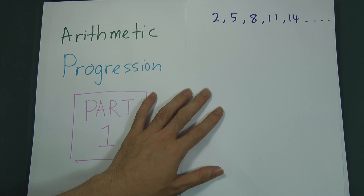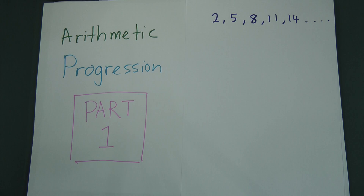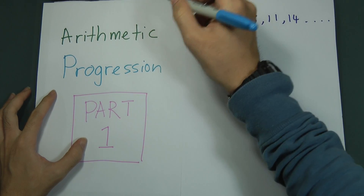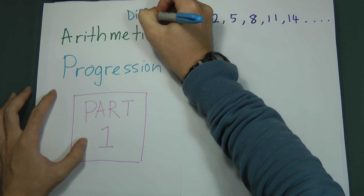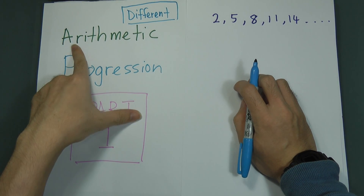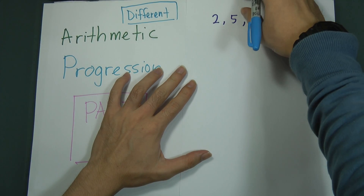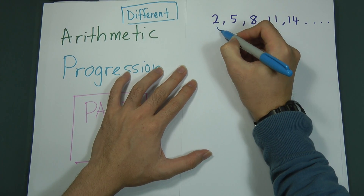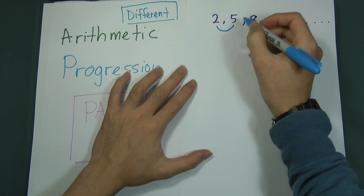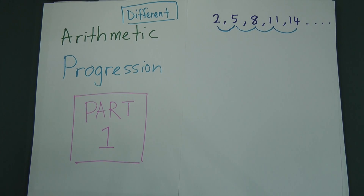When we talk about arithmetic progressions, the key concept is 'difference.' Compare this to geometric progressions, which use 'ratio.' For arithmetic, we use the difference. For example, we find the difference between 2 and 5, between 5 and 8, between 8 and 11, and between 11 and 14. This is what they call the difference.